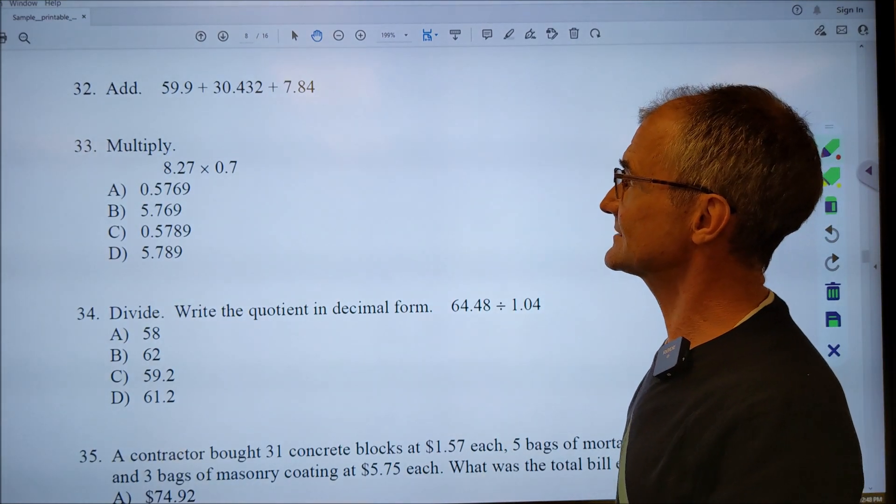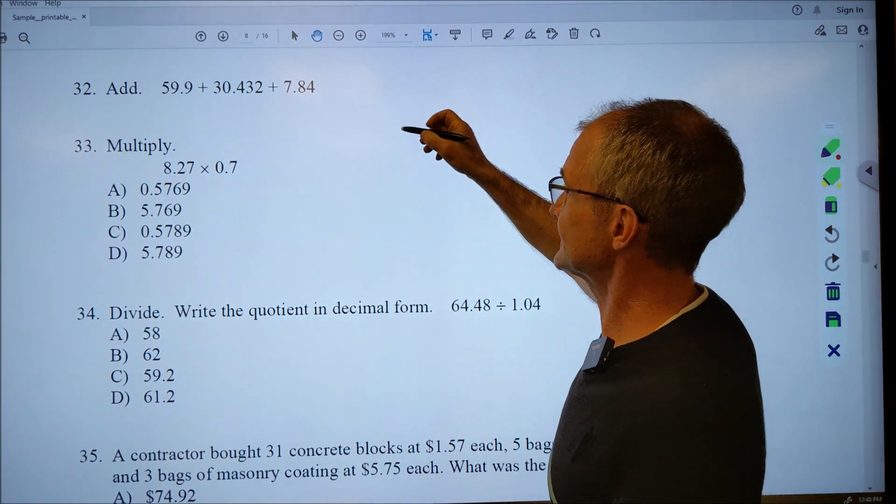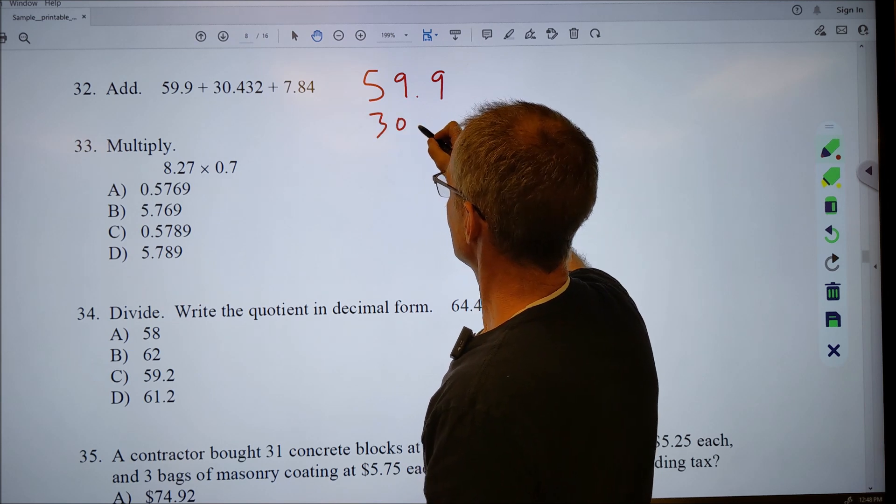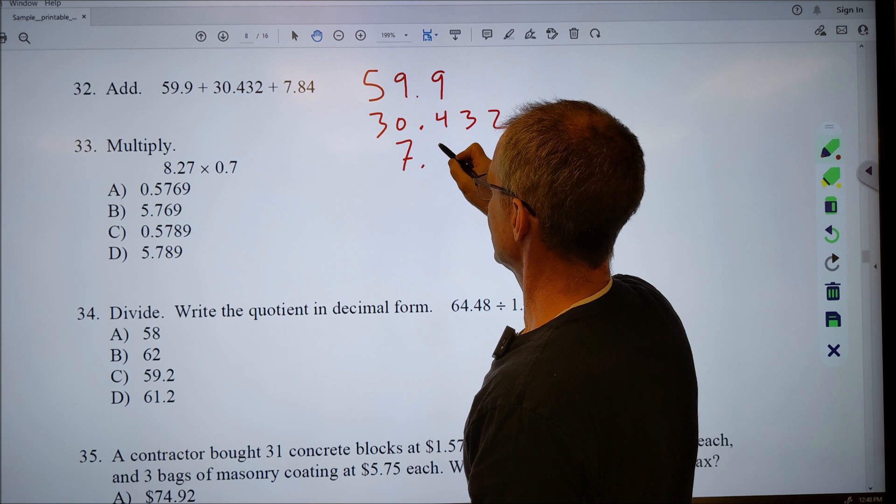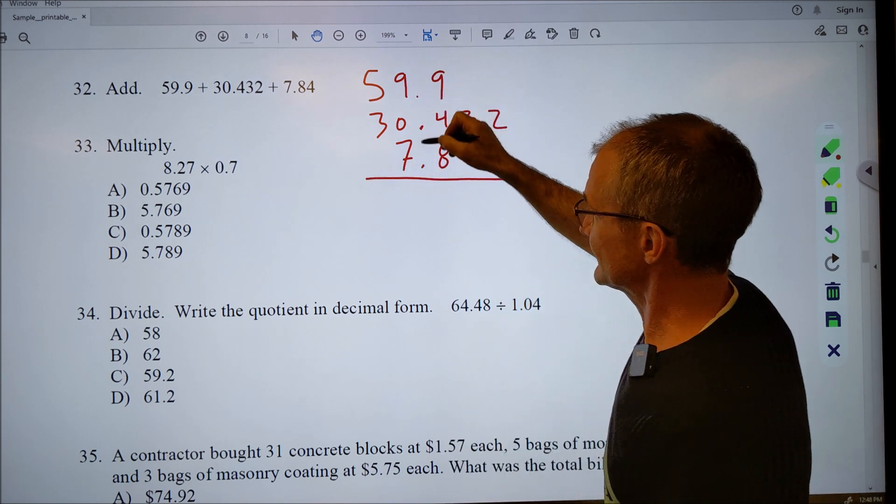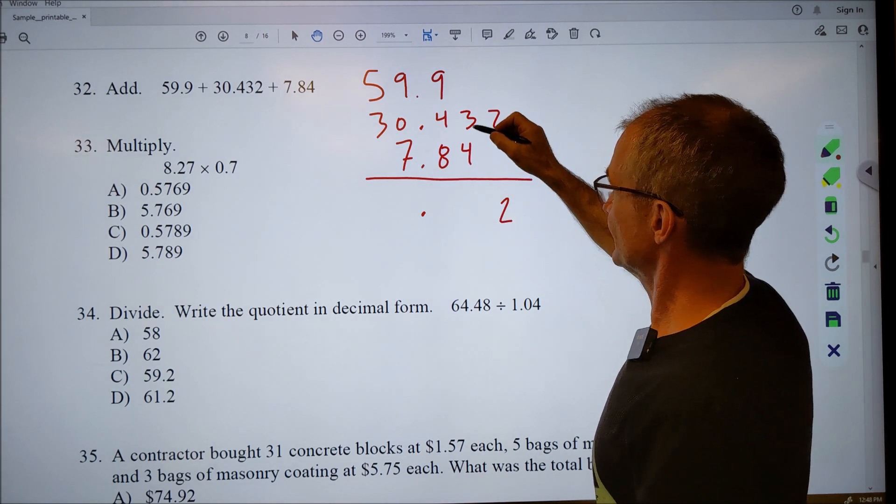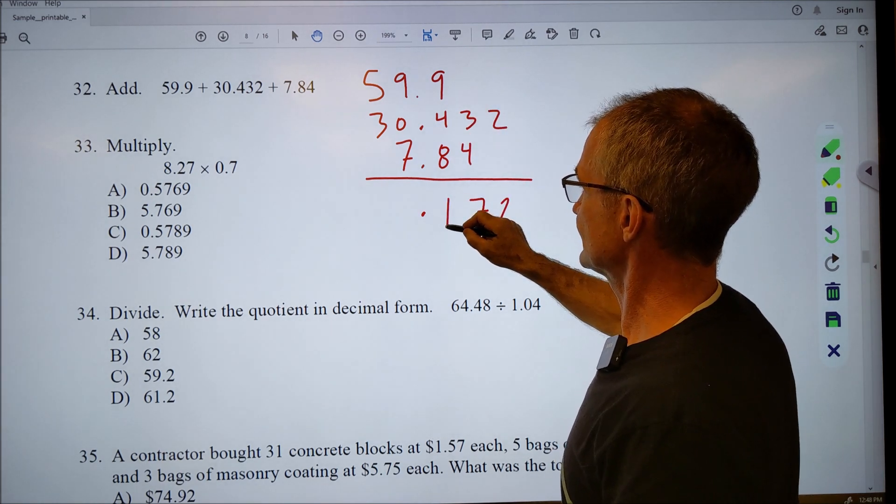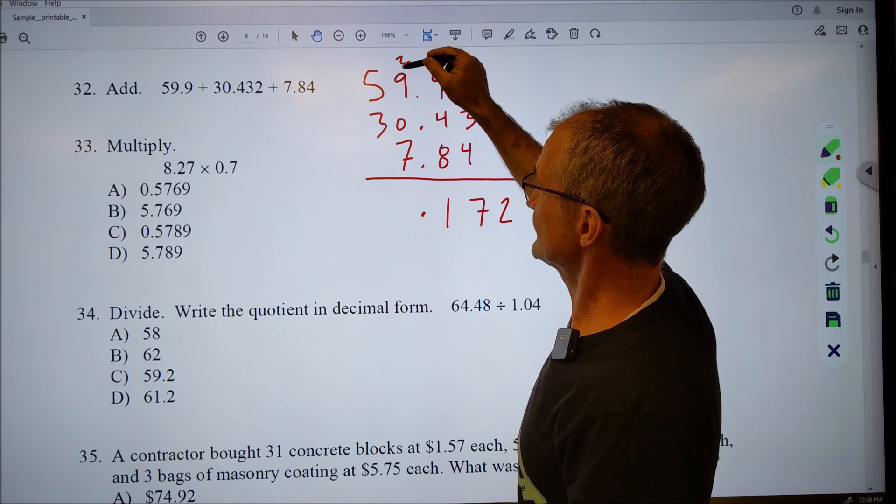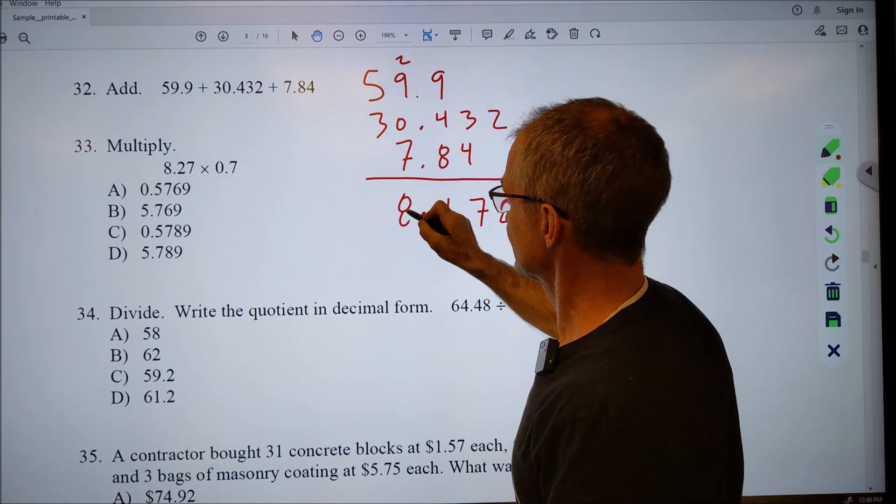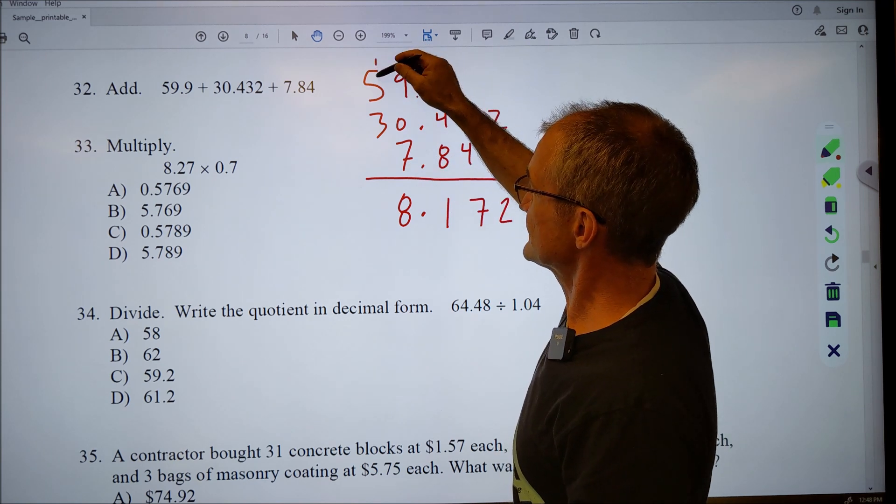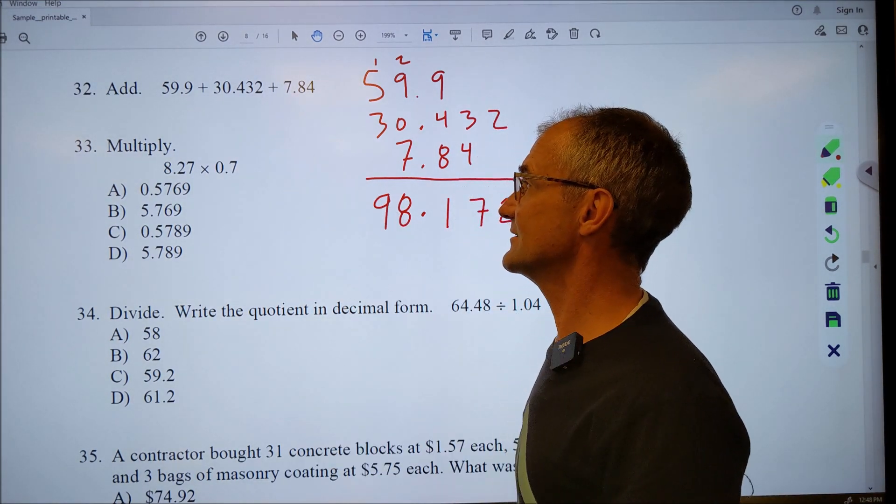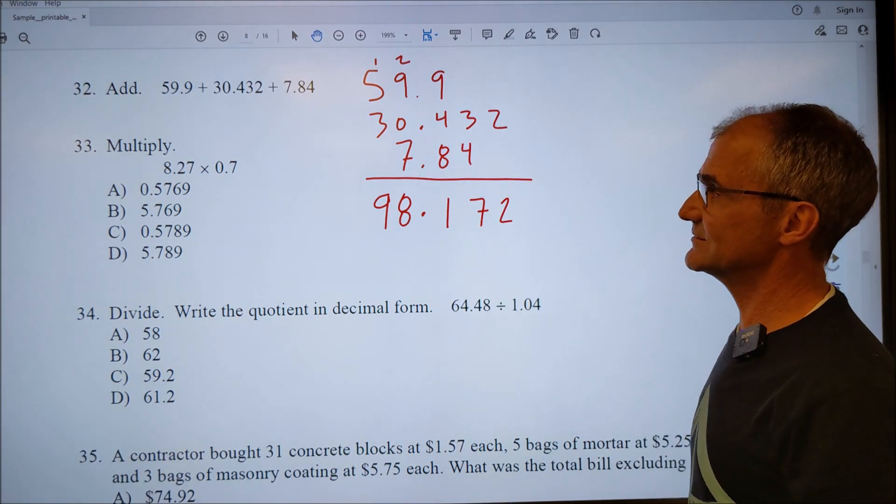Thirty-two. Add those three decimal numbers together. I'm going to rewrite them, lining my decimal point up. So I have 59.9 plus 30.432 and 7.84. I'm going to add them up. I just keep my decimal point right there. Two. The three and the four is seven. Nine and four is 13. Thirteen and eight is 21. There's the one part. I carry that two up there. Two and nine, 11. Seven plus seven, 18. I carry the one. One, six, nine, and I get 98. See if that even makes sense. Sixty and thirty, ninety plus seven. Pretty close to 98. So 98.172 is my answer.